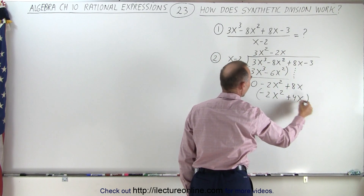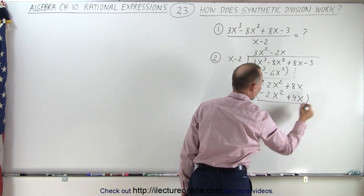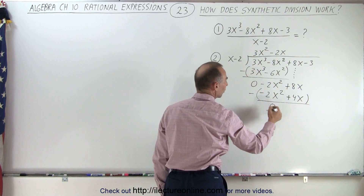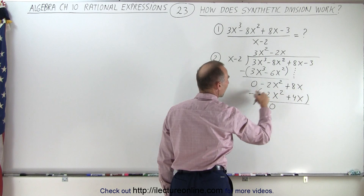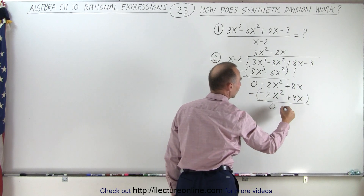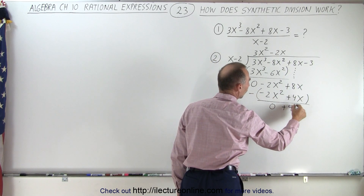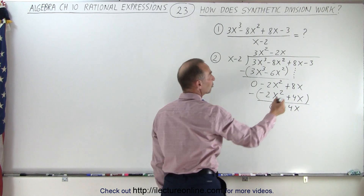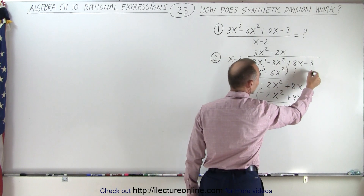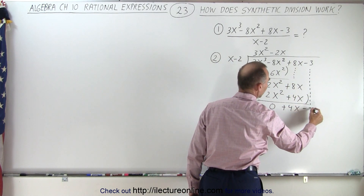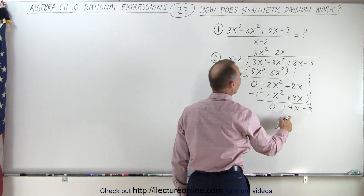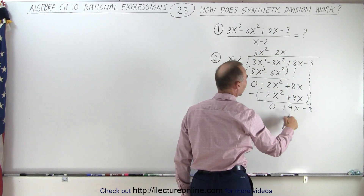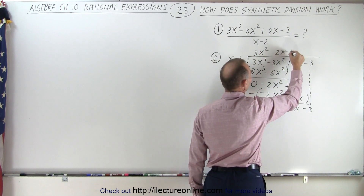Again, we subtract these two terms from the two directly above. This minus this gives us 0, and 8 minus 4 gives us a positive 4x. Then we drop down the next and last term, negative 3. Again, we ask ourselves: what times x gives us 4x? The answer would be plus 4.